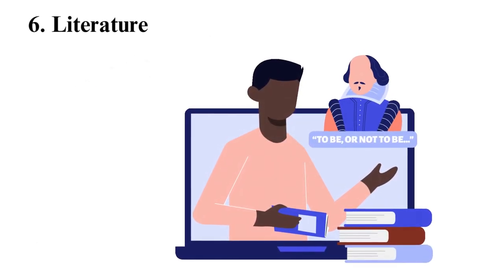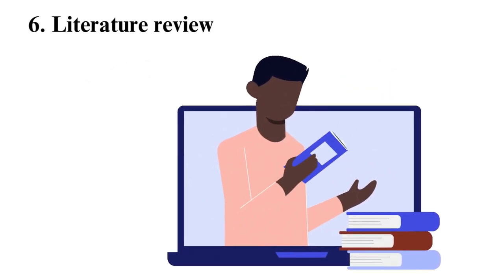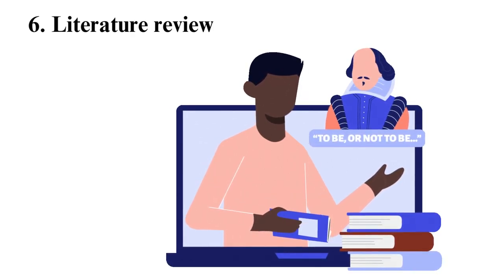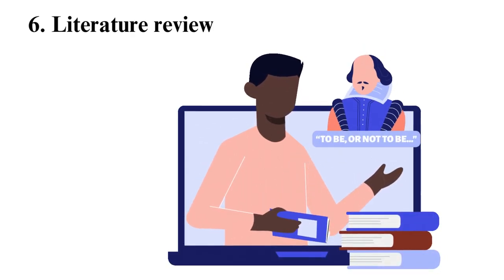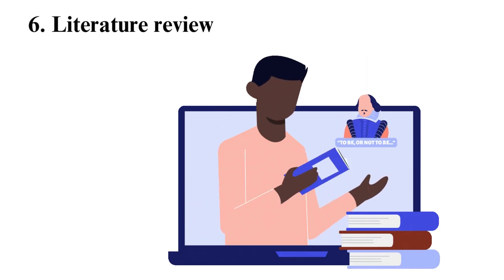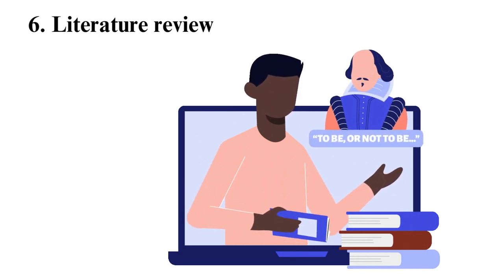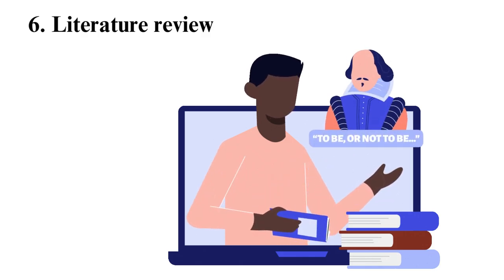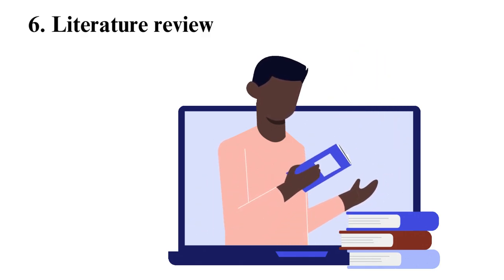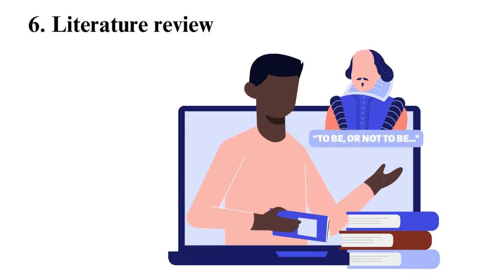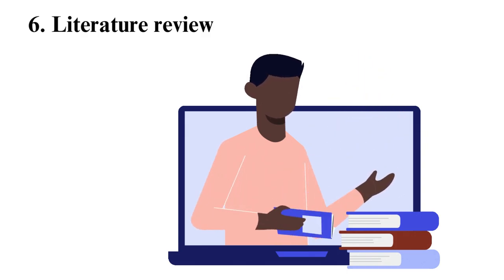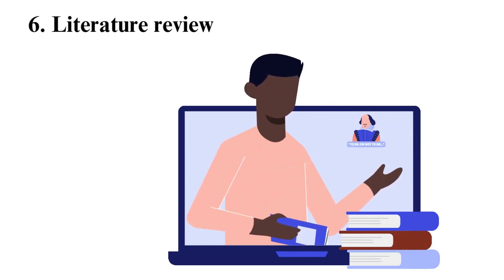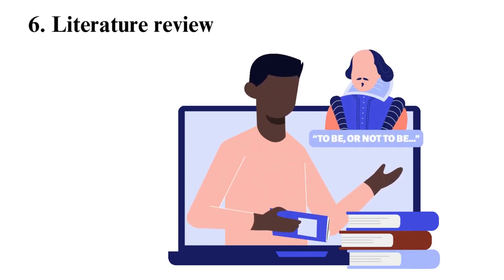6. Literature Review. Every course has key readings that impart conceptual knowledge to students, and you will likely be required to study one or more of them and present the theories and information from these sources. An effective literature review contains three parts: Introduction, which offers background information on the topic; Body, which discusses the source and the concepts discussed; and Conclusion, with recommendations of what could be included or changed in the future to improve the contents.